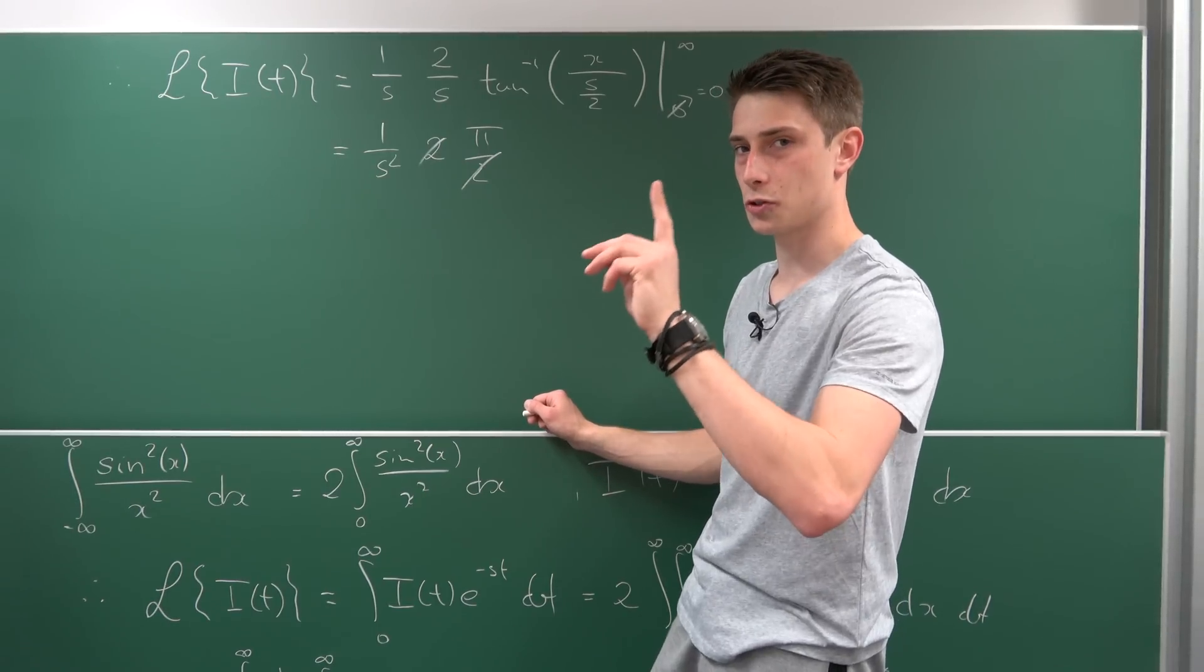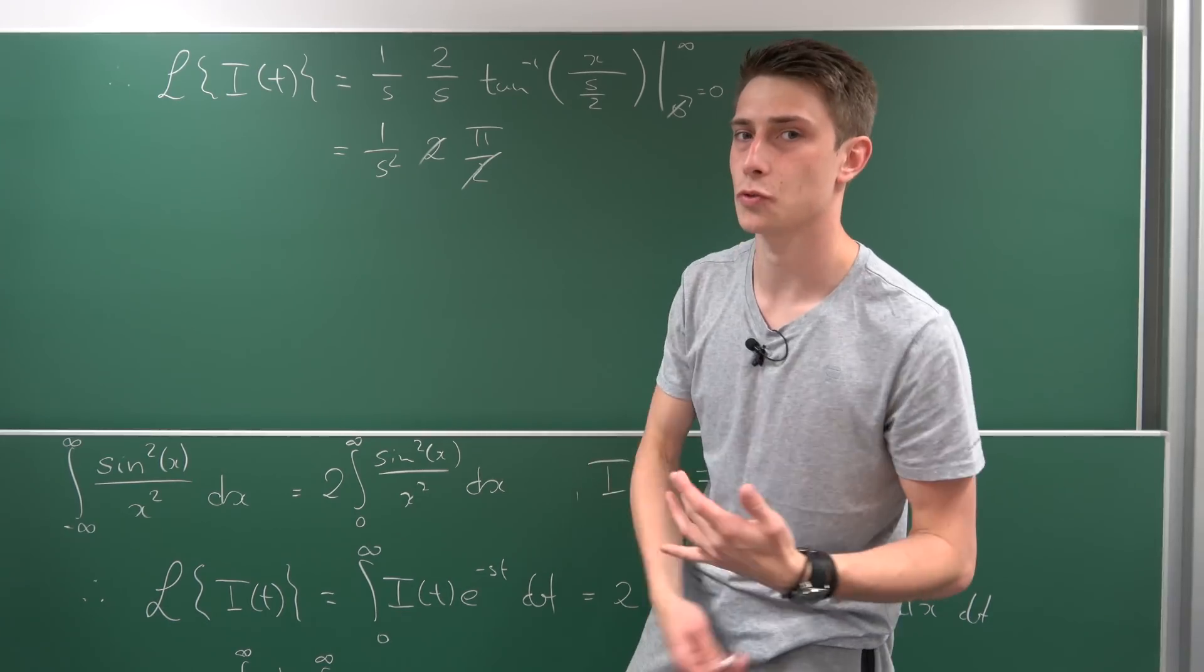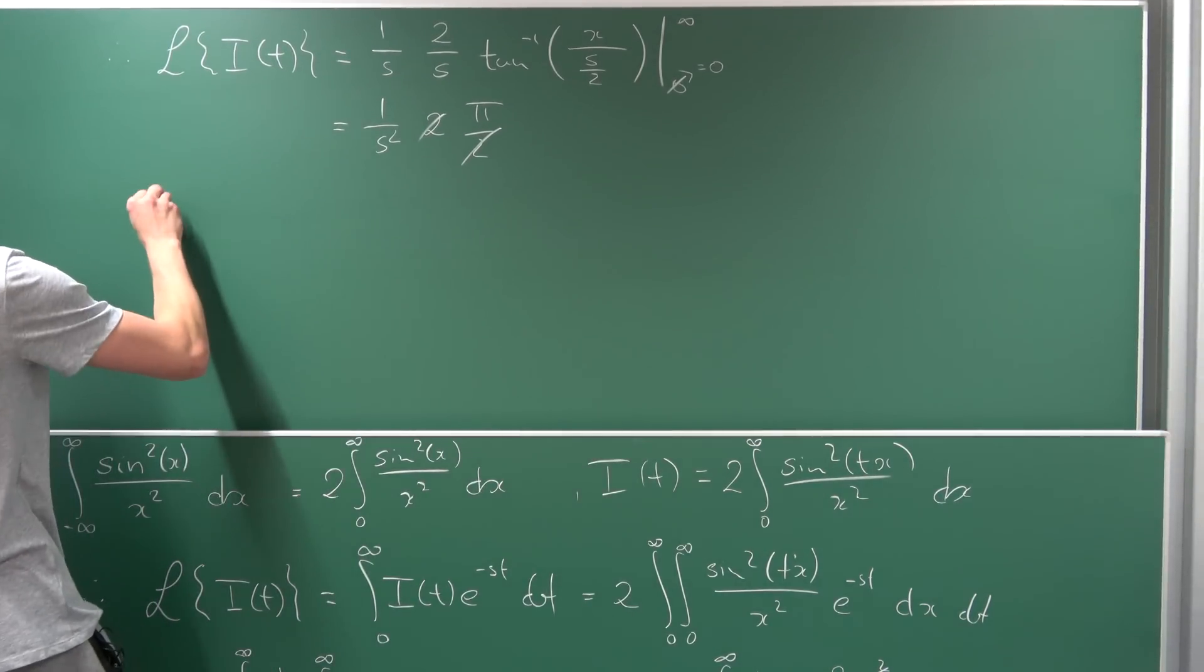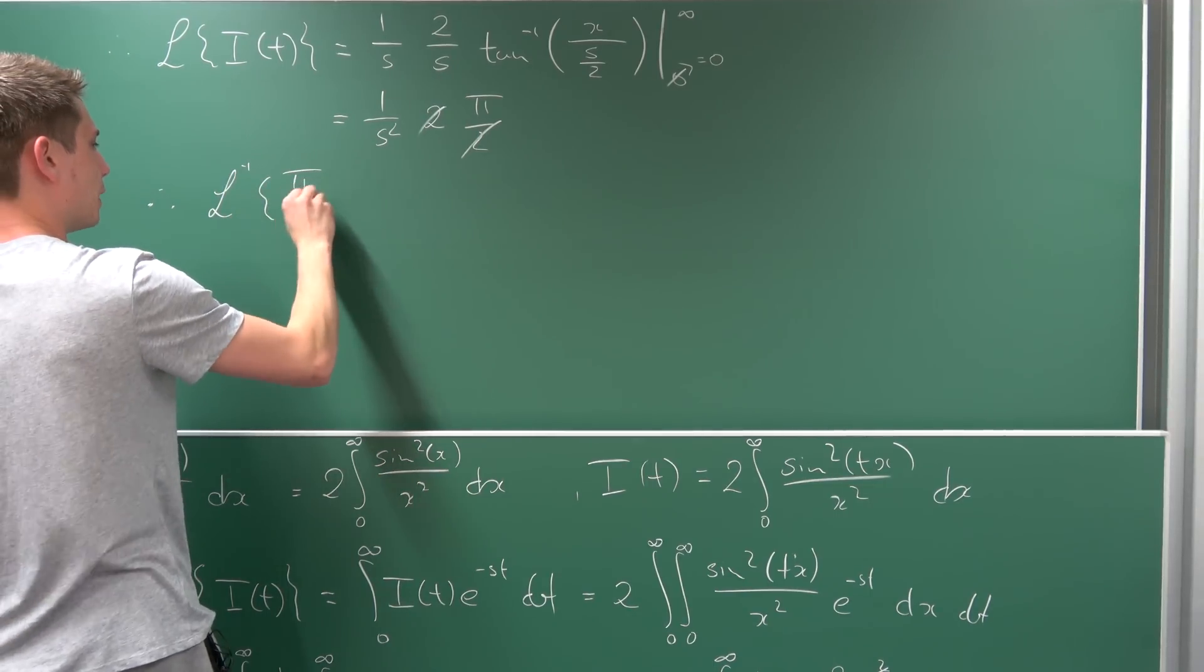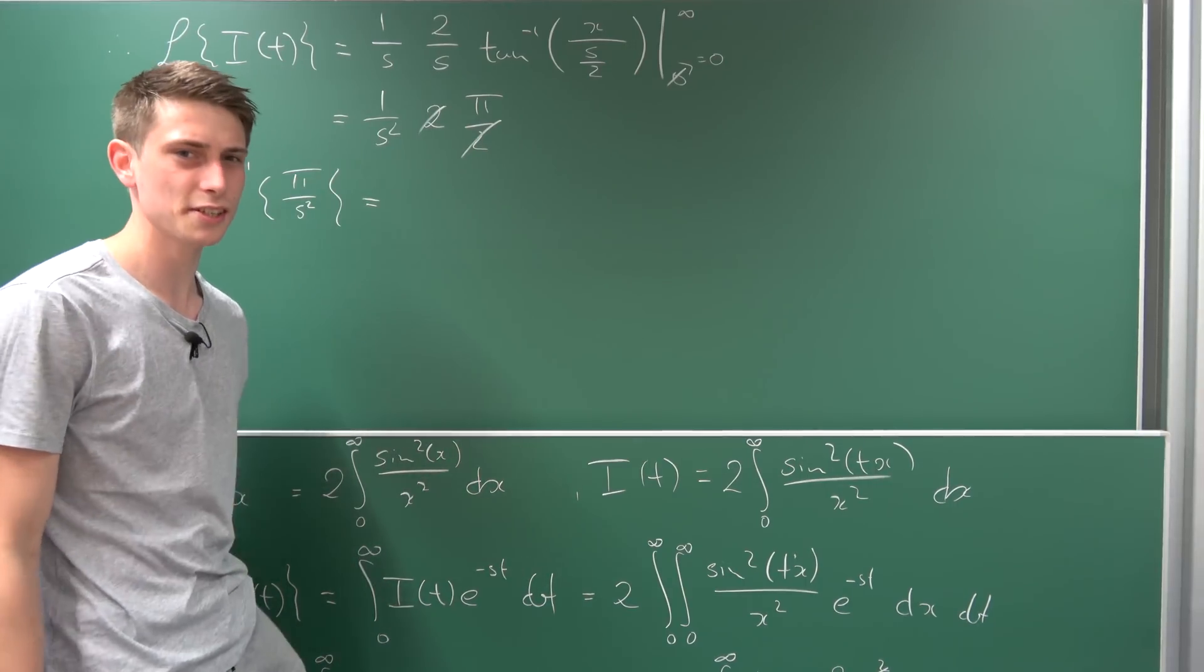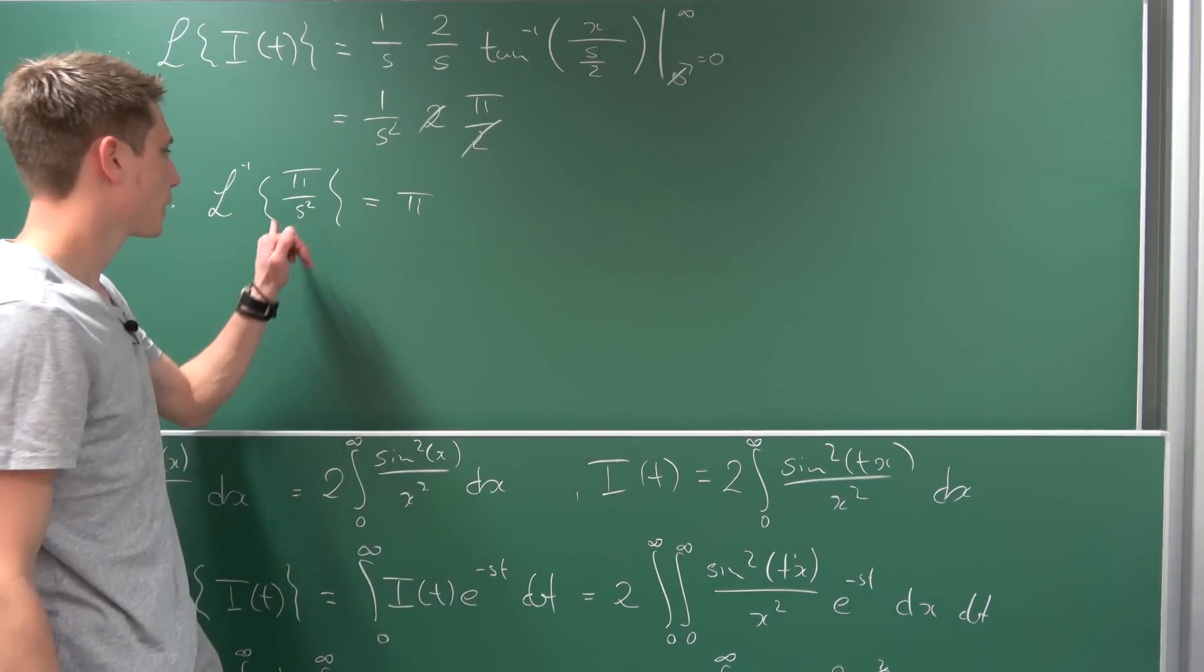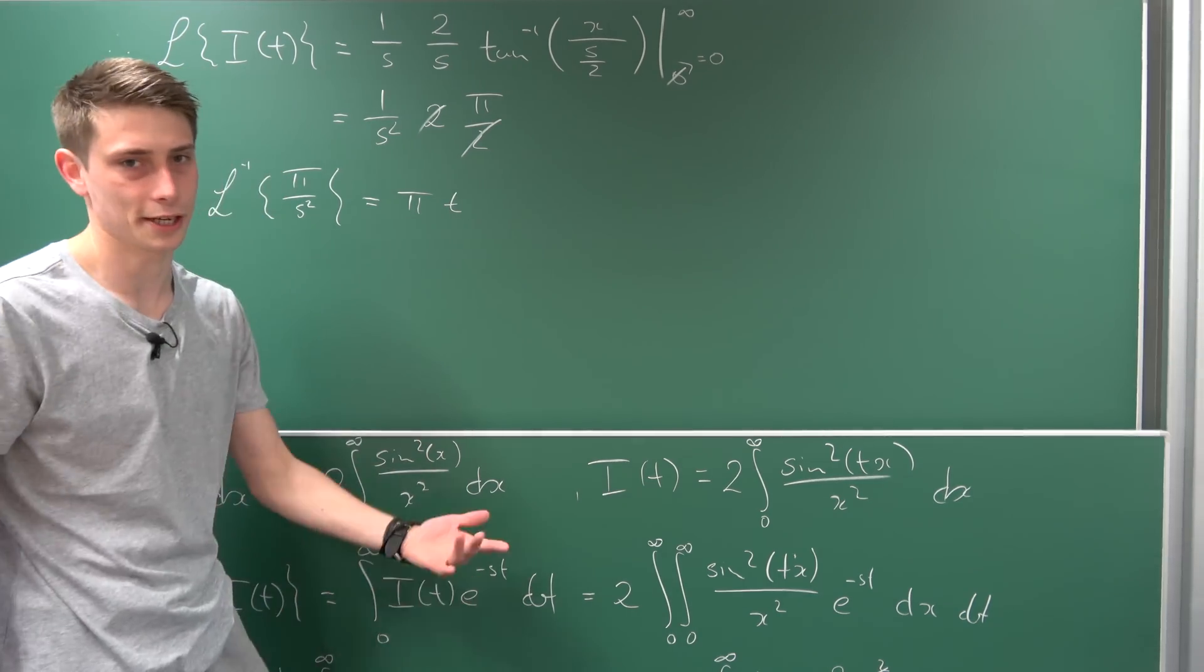We want to go back to our original I(t), so let's use the inverse Laplace transform on the Laplace transform of I(t), which is π/s². The inverse Laplace transform of π/s² - well, π is just a constant, so bring it outside. And 1/s², the inverse Laplace transform is just t. That's nice.